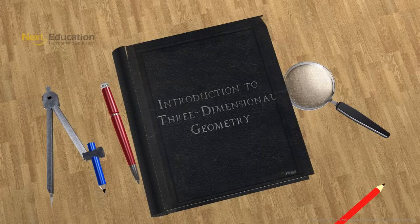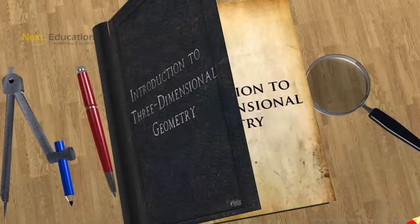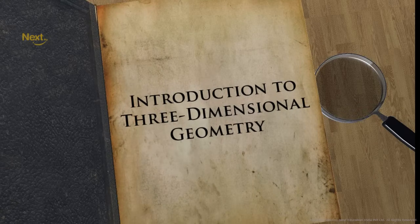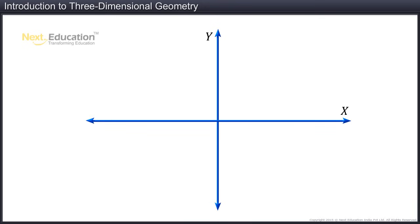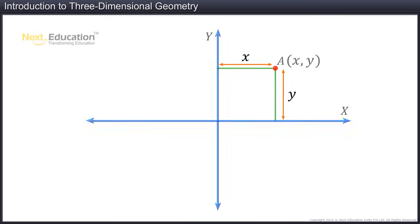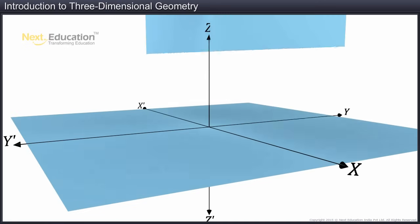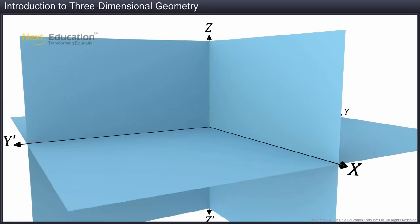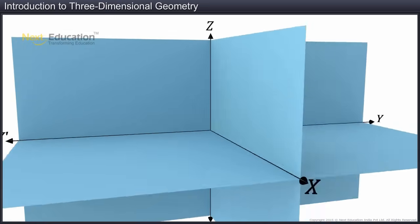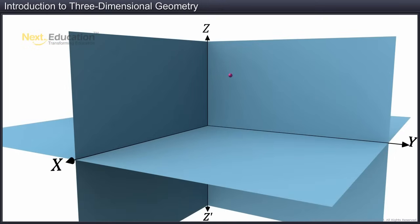In this module, you will learn about the coordinates of a point in space. We have seen how to locate a point in a two-dimensional plane with respect to its distance from the reference axis. In three-dimensional space, we identify a point with respect to the distances from the three reference planes.